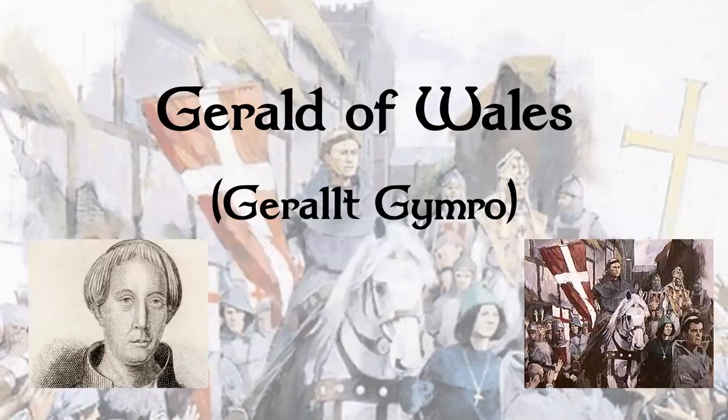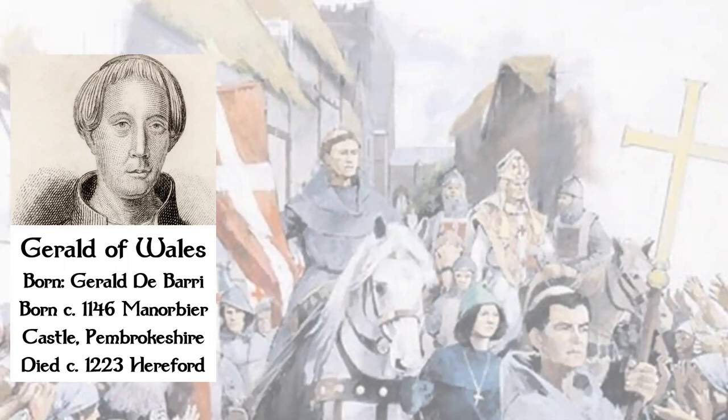Gerald of Wales was born Gerald de Barry — so, as we remember from our starter, it means Gerald from Barry. He was born circa — that's what the C with a full stop means, it means around — so Gerald of Wales was born around 1146. We don't know the exact date of when he was born.